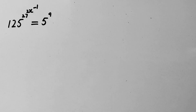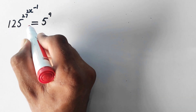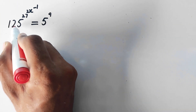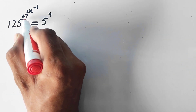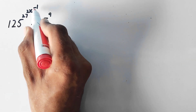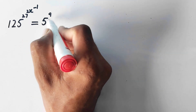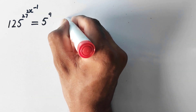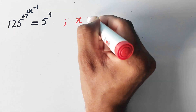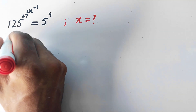Hello everyone, welcome to ExplodeMatch. Today we are going to solve this very nice exam question: 125 raised to power 27 raised to power 2x raised to power minus 1 is equal to 5 raised to power 9, and we have to find the value of x. So let us see the solution.